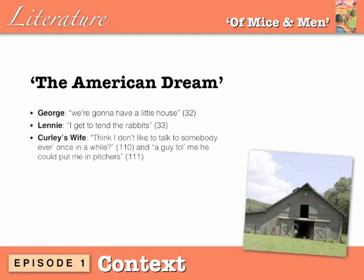Curley's wife's dream is twofold. 'I think I don't like to talk to somebody every once in a while' shows she craves friendship, but the men on the ranch assume she is looking to go behind Curley's back and they stay away from her. She also says, 'A guy told me he could put me in pictures,' which reveals her desire to go off to Hollywood, be a movie star, and become famous.